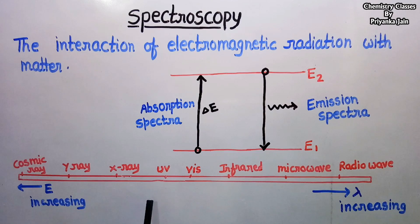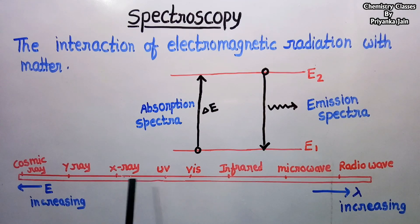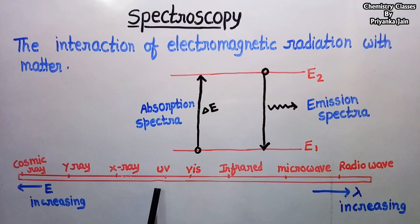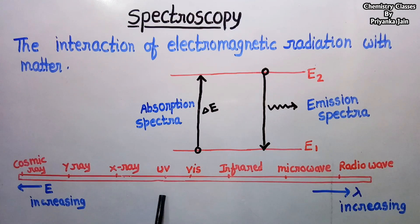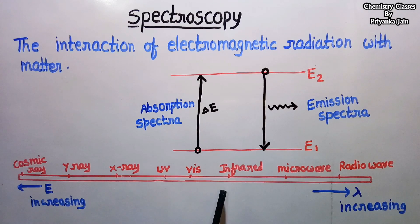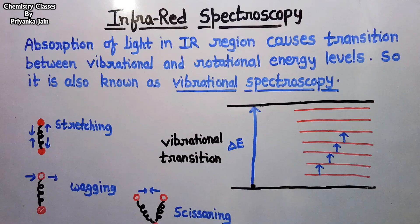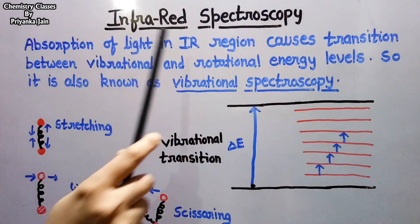We study spectroscopy according to the type of radiation that interacts with matter. If we study the interaction of UV or visible radiation, it comes under UV and visible spectroscopy. If we study infrared radiations, it is called infrared spectroscopy. In this video, we will study infrared spectroscopy.